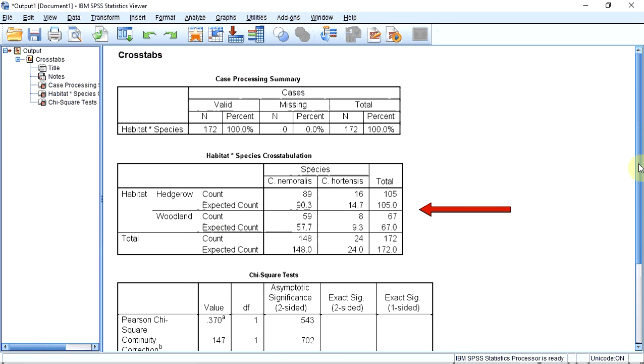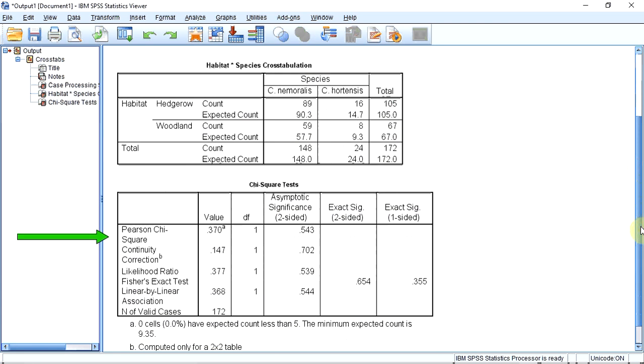In the output window, we can see in box 2 that the program has not only summarized the count data we entered but has also given us the expected values it has calculated. The p-value can be found in box 3. In this case, we want Pearson's chi-square, and the value is 0.543.